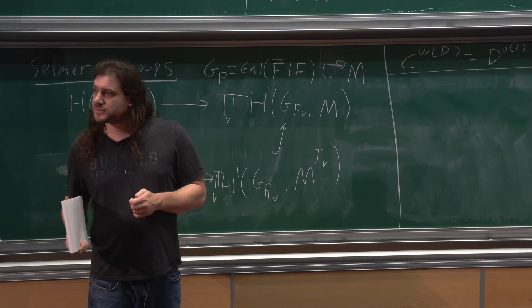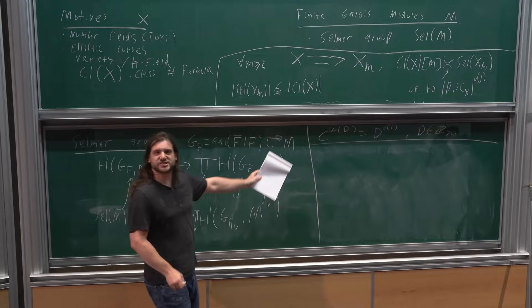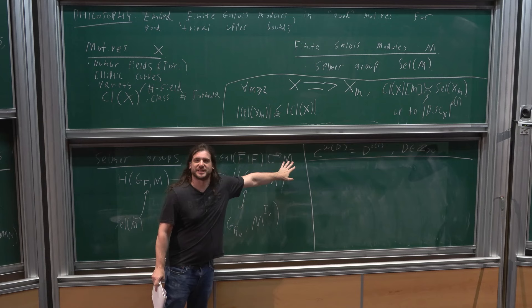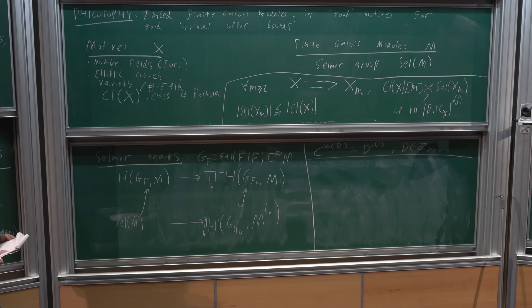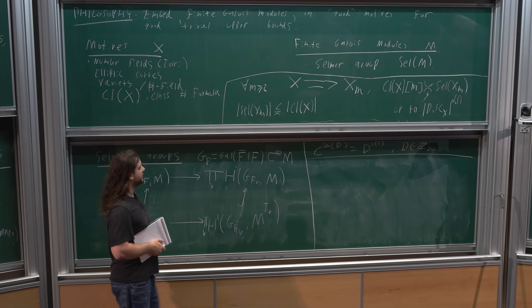Just to clarify: for all M, I get this X_M, but M is being held fixed in the little-o statement. X varies over some family with M fixed. The size of my Galois module M will always be fixed—what's varying is how the Galois group acts on M. The size of M will be small-m to some power.